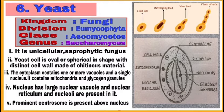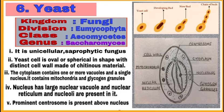Yeast is another fungus. It is a unicellular saprophytic fungus. Each cell is oval or spherical in shape with a distinct cell wall made of chitinous material. The cytoplasm contains one or more vacuoles and a single nucleus. It contains mitochondria and glycogen granules. The nucleus has a large nuclear vacuole, and nuclear reticulum and nucleoli are also present. A prominent centrosome is present above the nucleus. After writing this, draw a labeled diagram as shown in the picture.